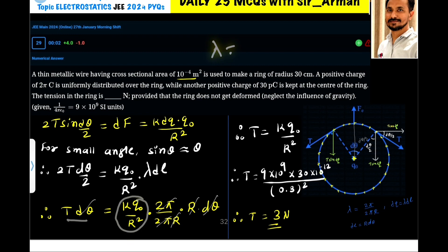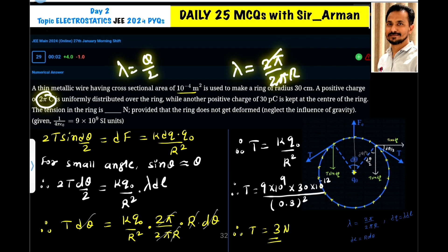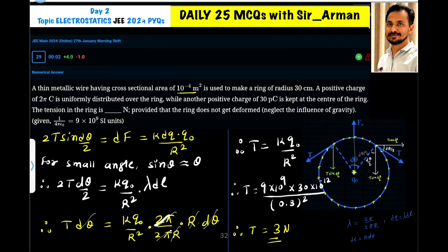λ = 2π/(2πR). It is given that 2π charge - because λ = total charge/length. So the total charge distributed is 2π and the length of the ring is 2πR. So it is 2π/(2πR). Here 2π, 2π get cancelled; R, R get cancelled; dθ, dθ get cancelled. So tension will be K Q₀/R². Therefore, T = K Q₀/R².